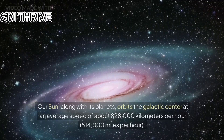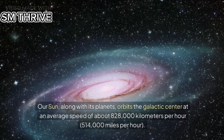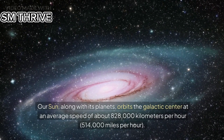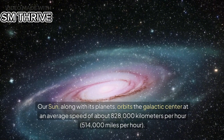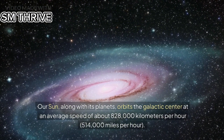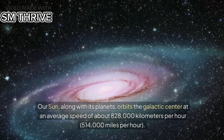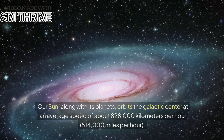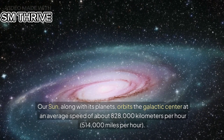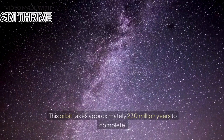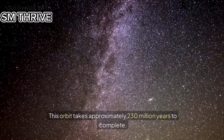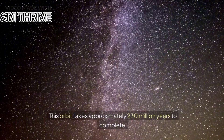Our Sun, along with its planets, orbits the galactic center at an average speed of about 828,000 km per hour. This orbit takes approximately 230 million years to complete.